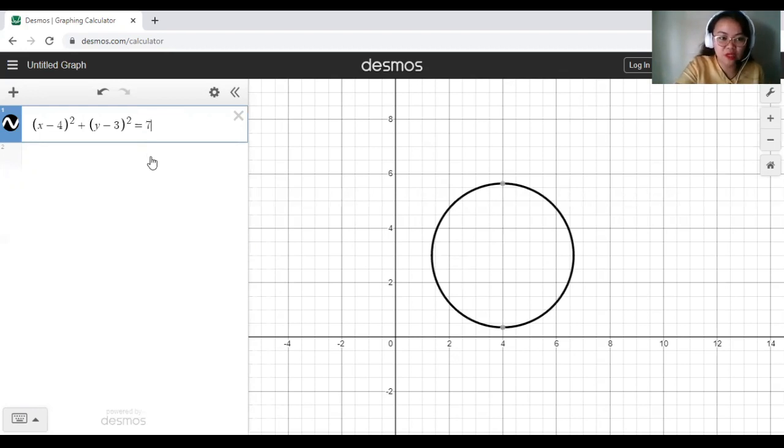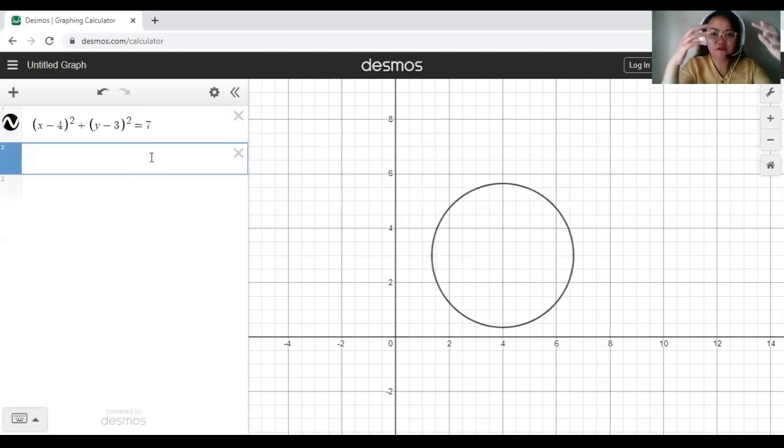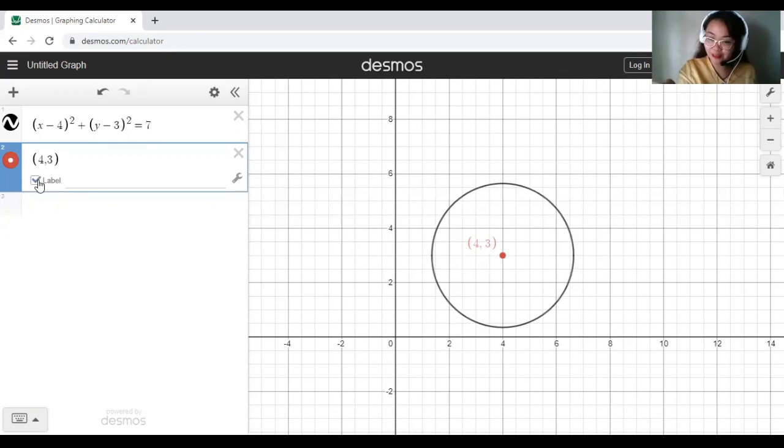And then to be able to label the center, from our standard form of equation, you identify the center. In this case, you just type in the coordinates 4, 3. And we now have our center here. Check the label and type in center.